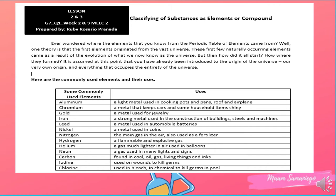You can now see the commonly used elements and their uses. Number one is aluminum — a light metal used in cooking pots and pans, roof, and airplanes. Ito yung mga light metal na ginagamit natin sa panggawa ng mga kaldero, sa bubong, at ang mga materyales sa paggawa ng eroplano.